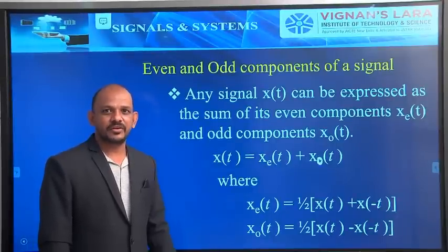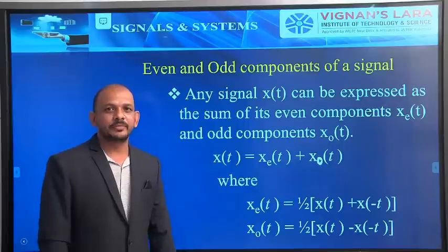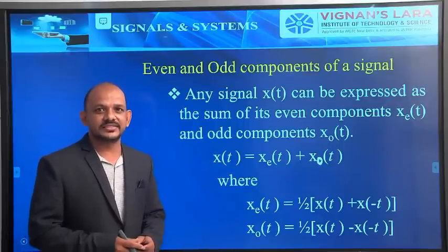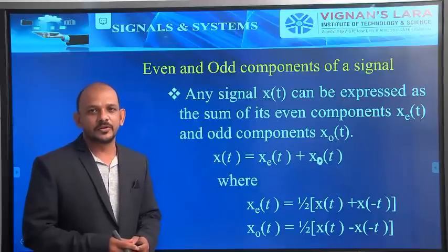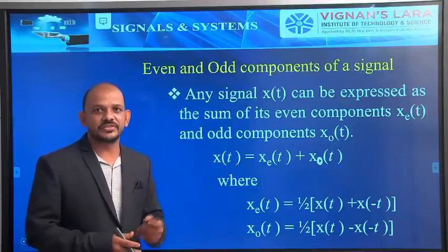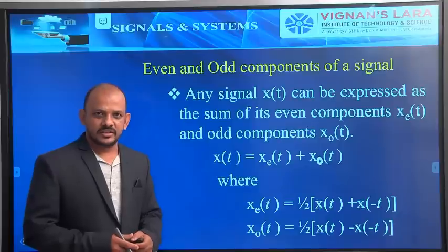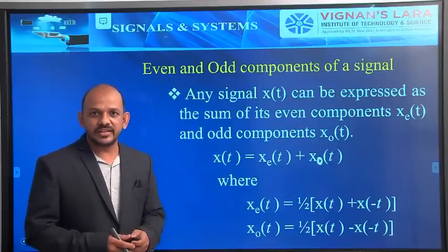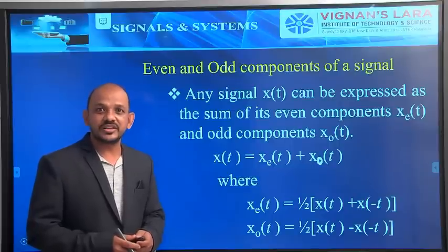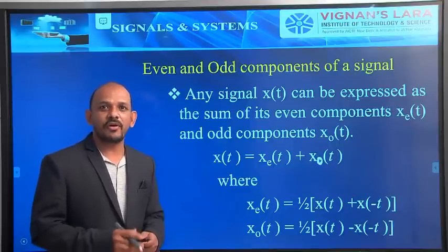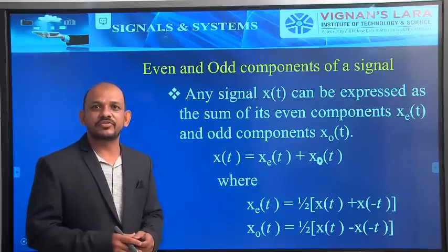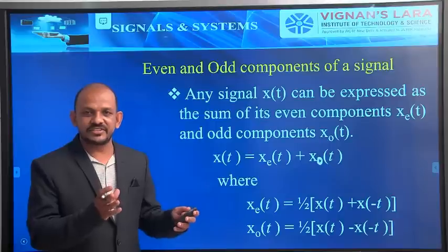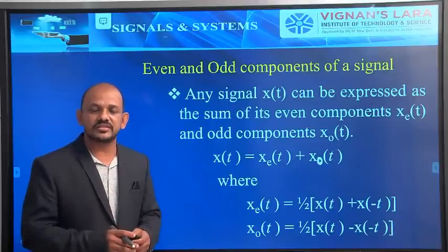Hi students, welcome to the class. In the previous class, I discussed about even signals and odd signals — which is an even signal and which one we call as an odd signal. An even signal has to satisfy the condition x(t) equal to x(-t). If a signal satisfies this condition, then the signal is called an even signal.